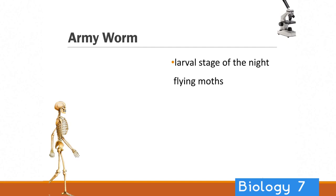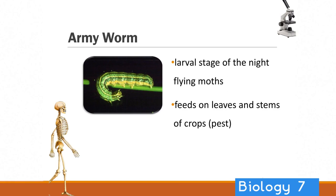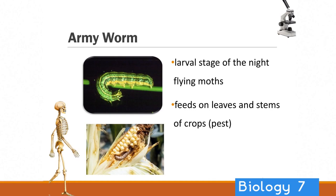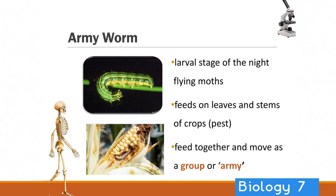There's also something called the army worm. The army worm has a larval stage, and in this larval stage it feeds on leaves and the stems of crops, making it a huge pest for farmers. It can get amongst the corn and cause all sorts of damage. They feed together and move through crops in a big group — sometimes farmers refer to them as an army of worms, hence their name, army worm.